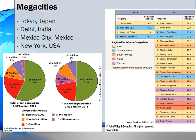The pie charts on the left show urban population by size of city in 1975 and 2011. Compare these charts to see how much the urban population has increased and to see the rising share of the urban population that lives in megacities.